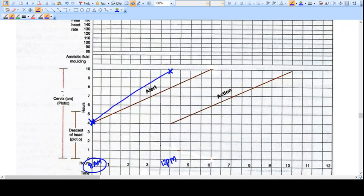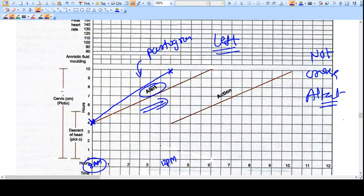As you can see that the partogram is on the left side of the alert line, it does not cross the alert line. That means everything is okay, the labor is progressing well as it should. Nothing to do, just wait and watch for delivery.